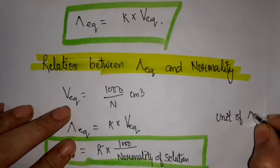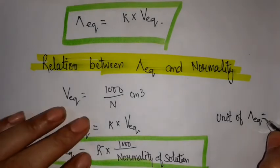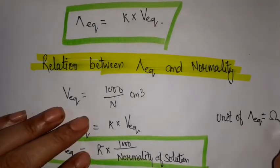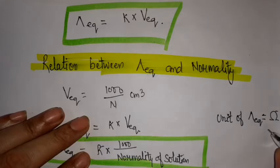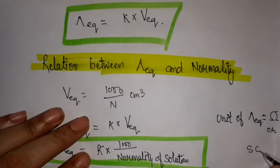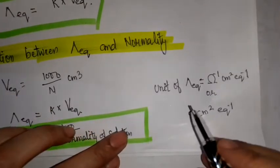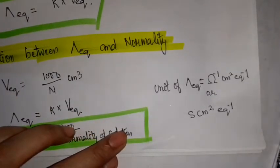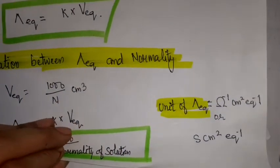The unit of equivalent conductivity is ohm per centimeter square per equivalent, or S centimeter square equivalent minus 1.